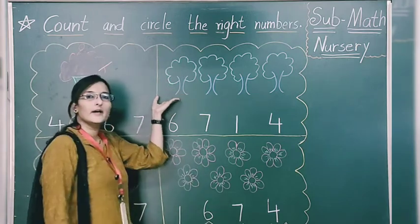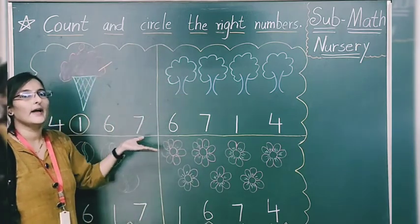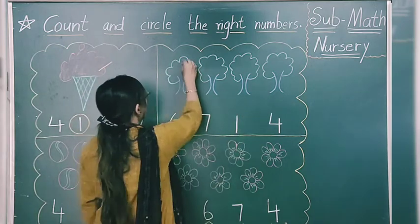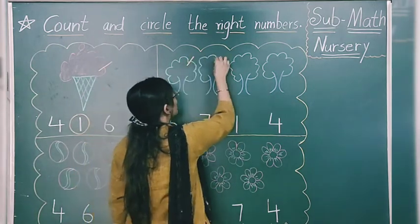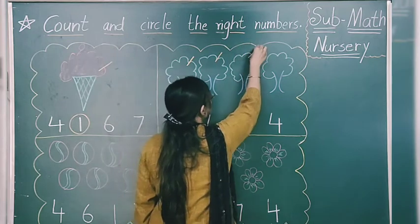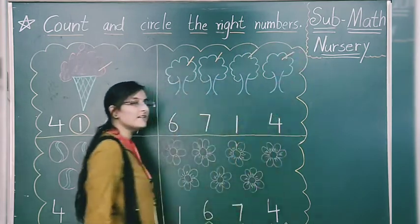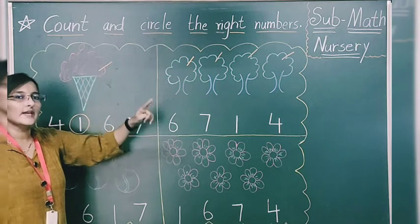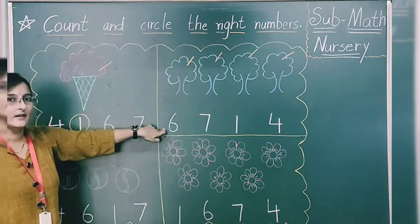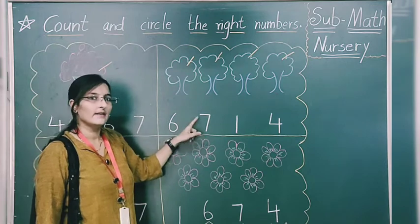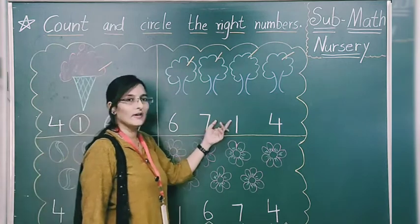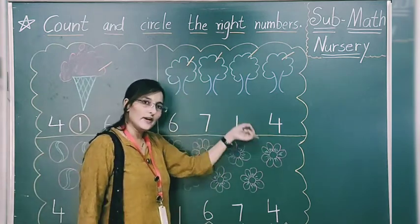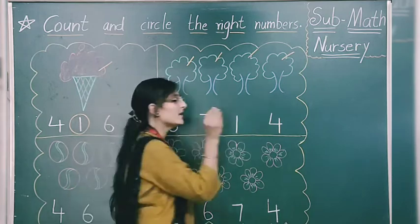What are drawn over here? Count these drawings. Look at here: 1, 2, 3, 4. How many trees are here? 4. So what do we do? We have to do circles on number 4. You can recognize the number — circle on 4.